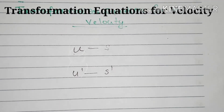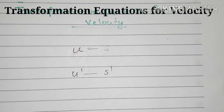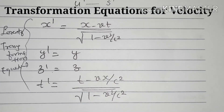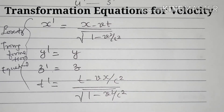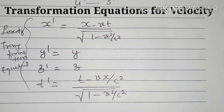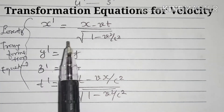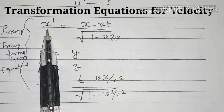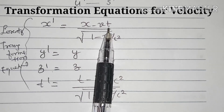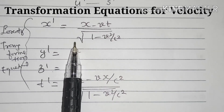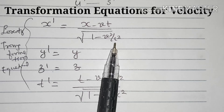We have the Lorentz transformation equations of space and time. In the S dash frame, X dash is equal to X minus V T, divided by the square root of 1 minus V squared by C squared.